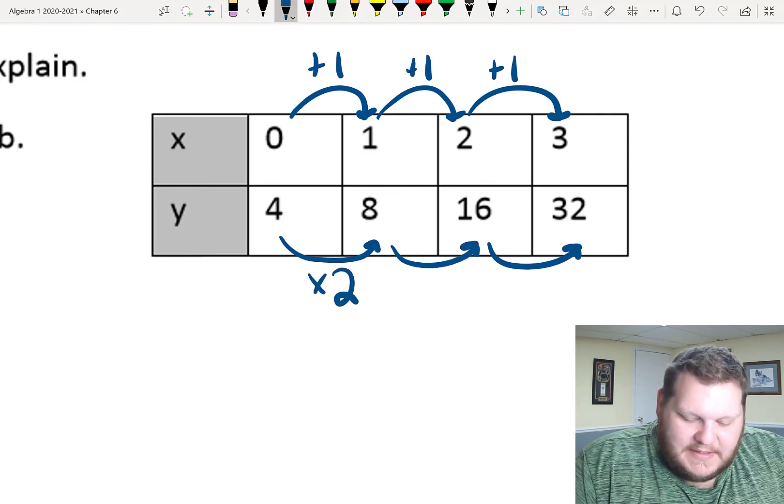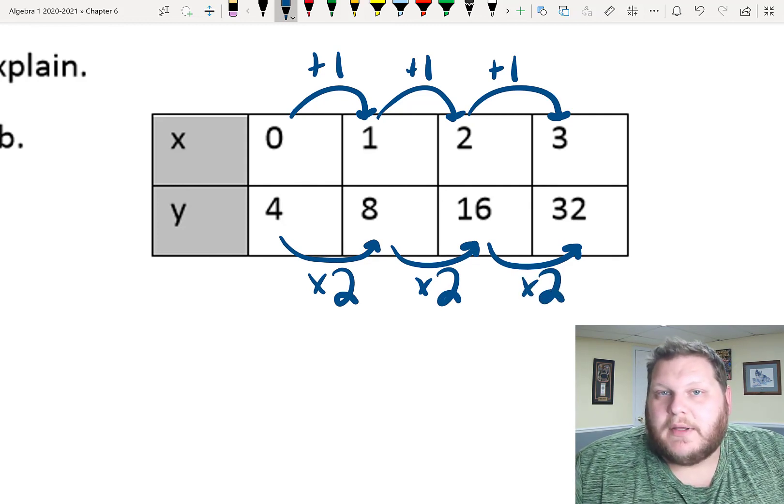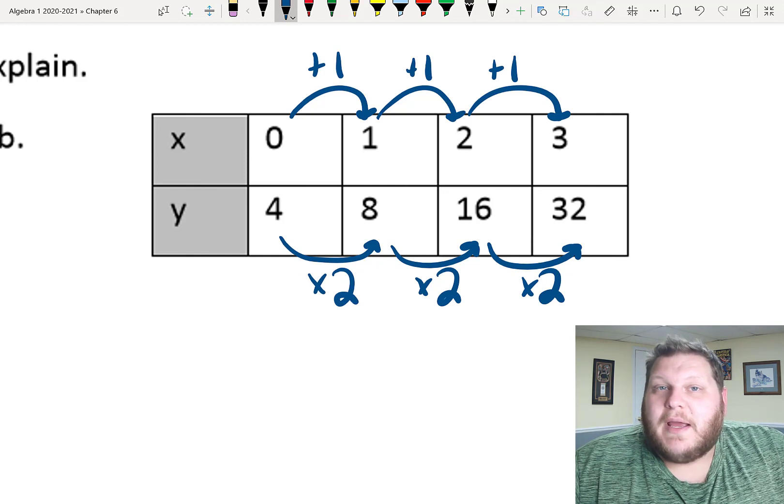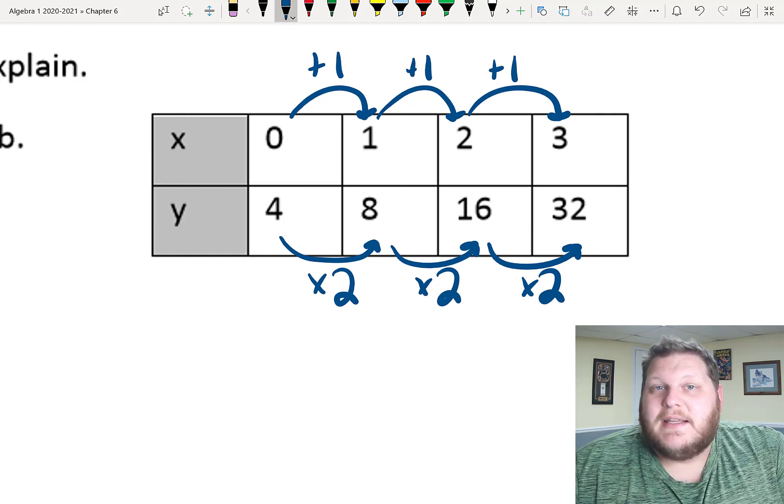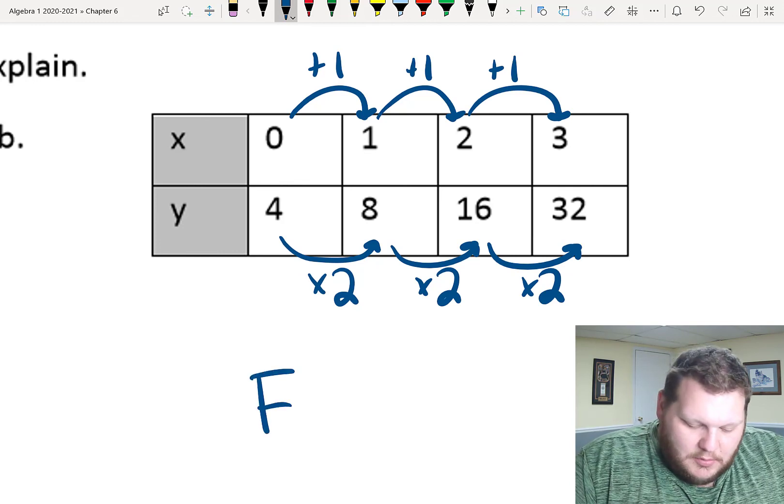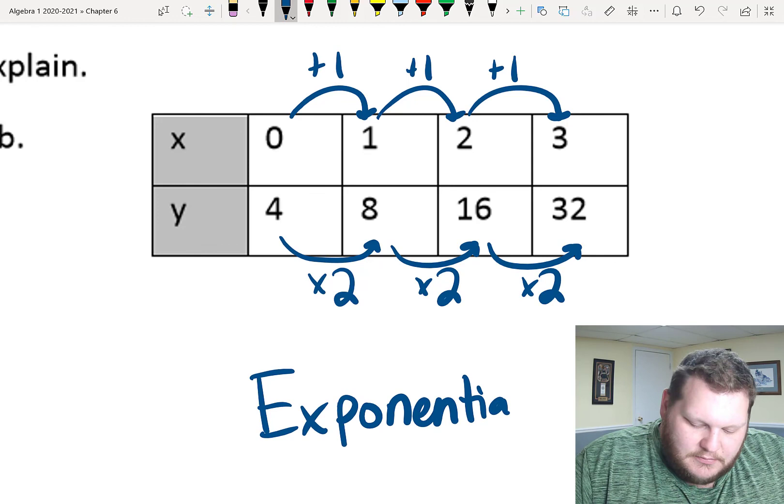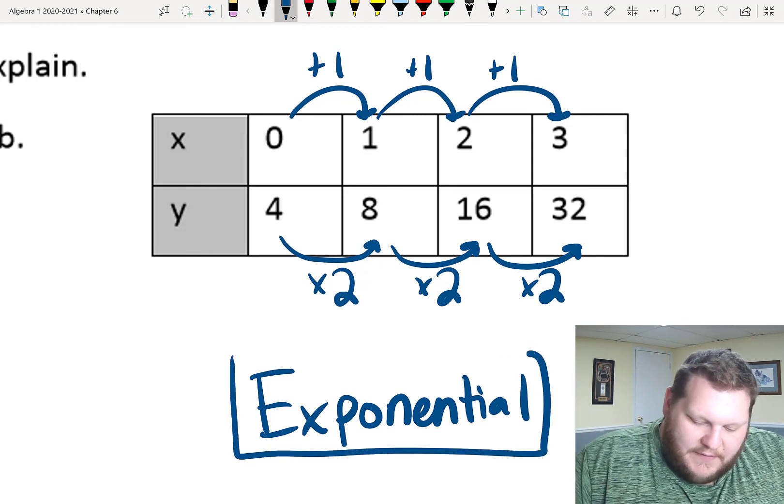So, hopefully, we can see this, and part of it comes with experience and being able to recognize these more quickly. But here, we're multiplying by two to get from one to the next in my outputs. So, because I have that common multiplication, we can conclude that Part B is an exponential, because we have that common multiplier.